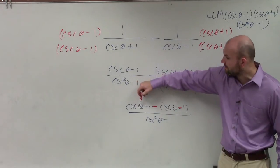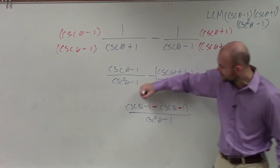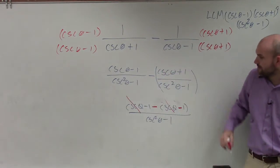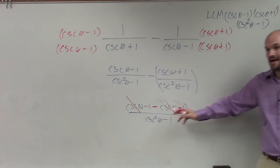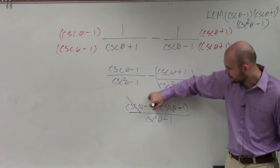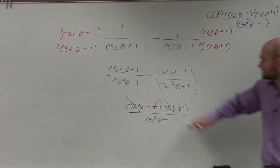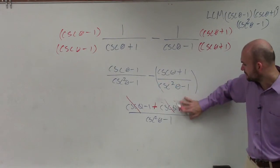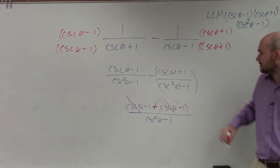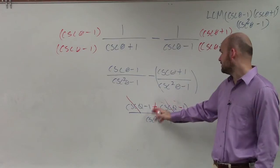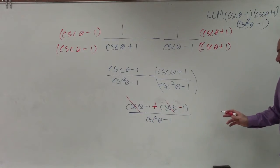You can see cosecant of theta minus cosecant of theta. That's going to subtract to 0. Negative 1 minus 1 is going to be negative 2.